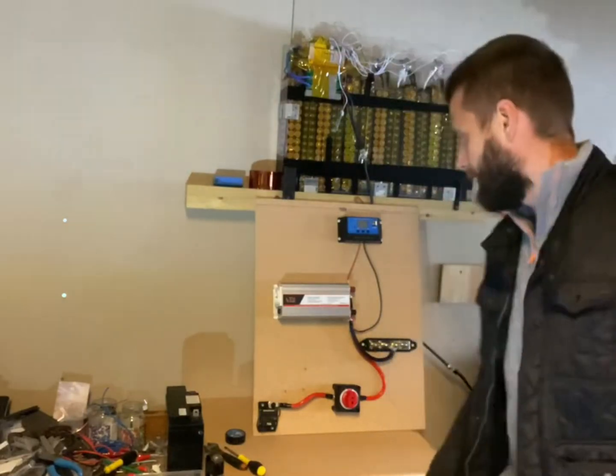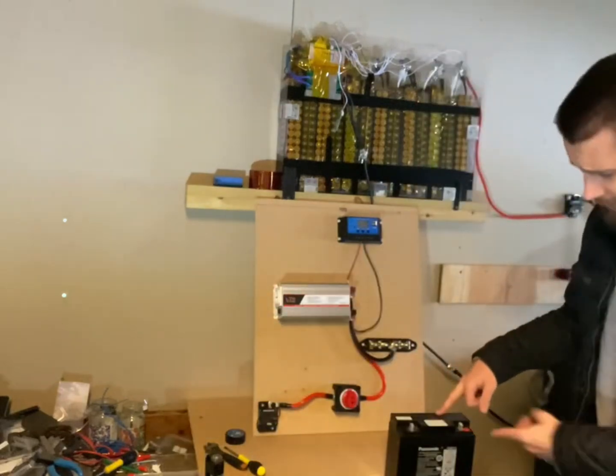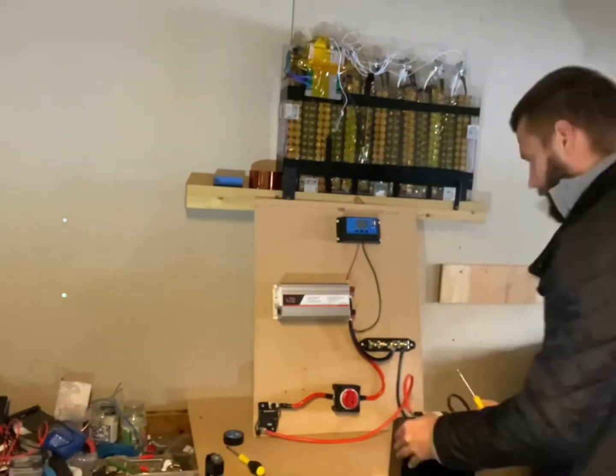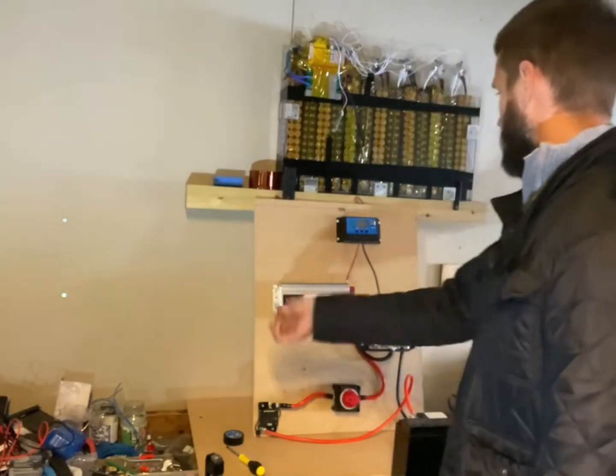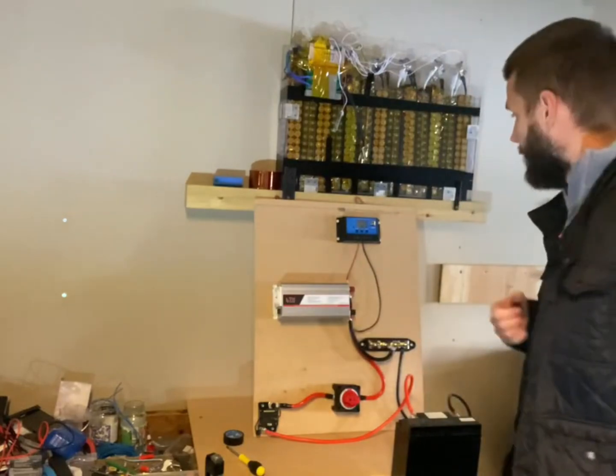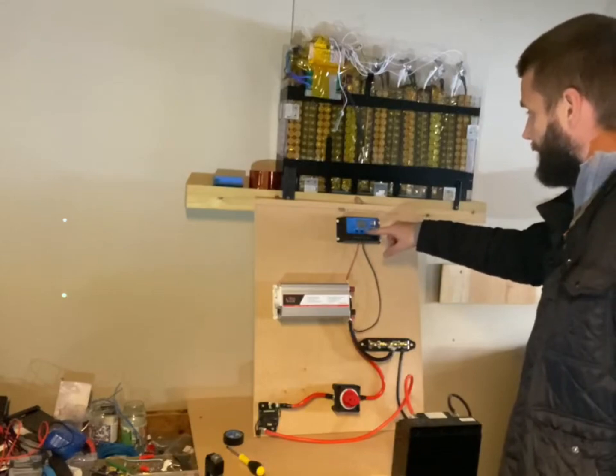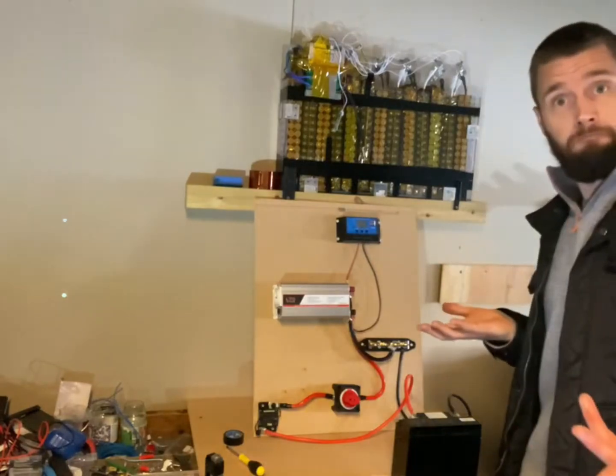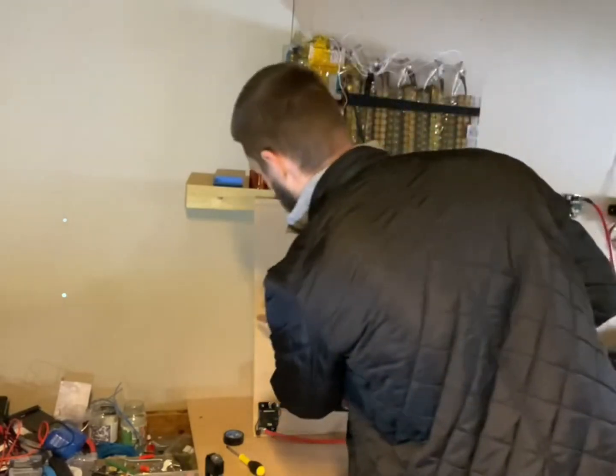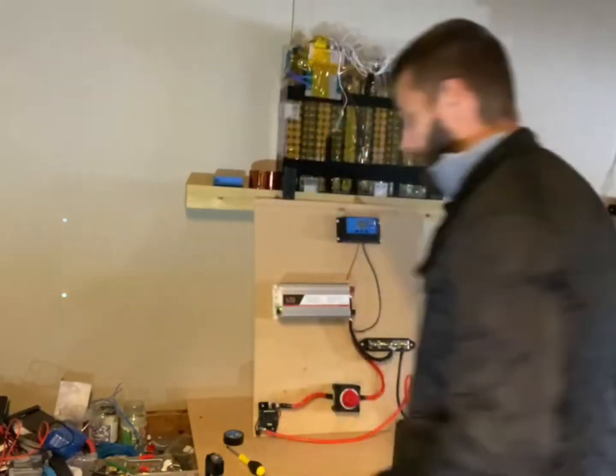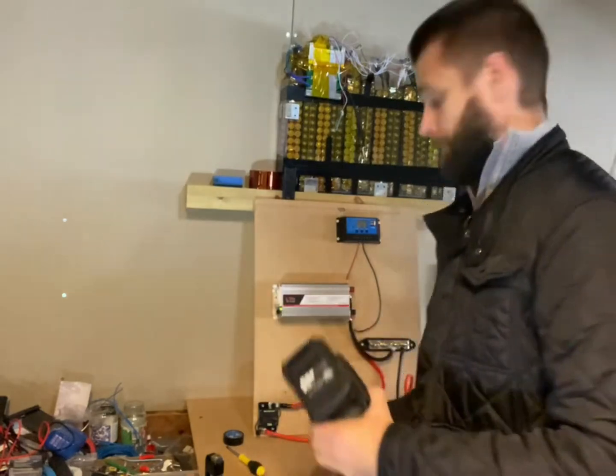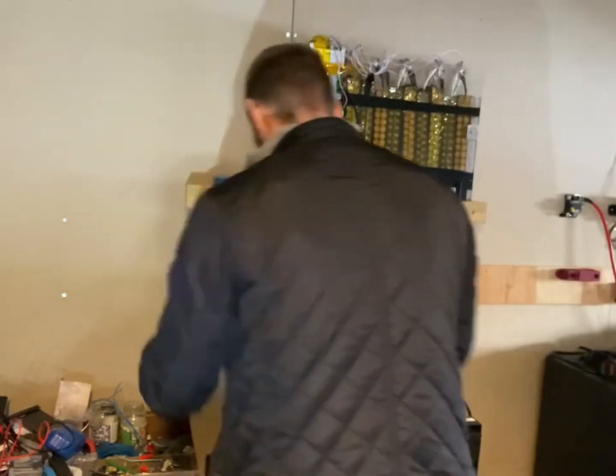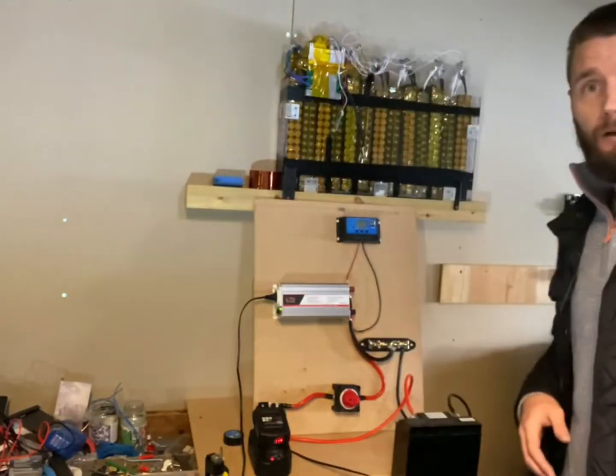Let's test it out. We need a battery, this is a small battery. We've got power. The charge controller says 13 volts. Nice, right? And the inverter is on. Let's see if we can power some, let's see if I can charge my power tools. There we go.